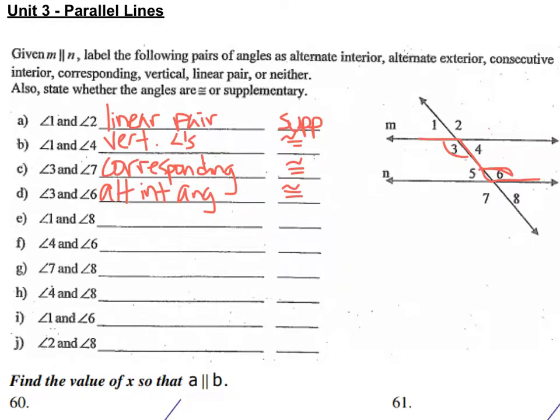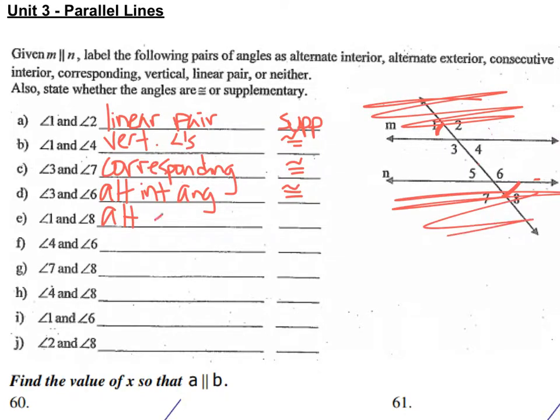Next we're going to look at angle 1 and angle 8. Those are on the opposite sides of the transversal, so alternate, but they're on the outside of my parallel lines, so we say alternate exterior angles. And alternate exterior angles are also congruent.